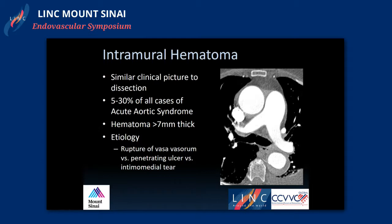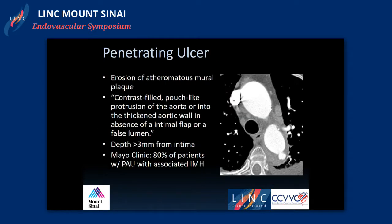The thoughts about etiology have changed. Initially the thought was spontaneous rupture of a vasa vasorum in the media, leading to an intramural hematoma. Over the past few years, thinking shifted to the intramural hematoma being preceded by a penetrating ulcer or intramural medial tear, allowing blood to flow into the aortic wall. The penetrating ulcer — visible as a small outpouching — is erosion of atheromatous mural plaque into the aortic wall, with a contrast-filled pouch-like protrusion in the absence of an intimal flap or false lumen.